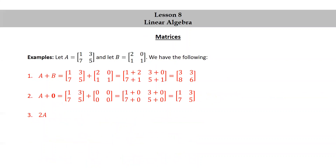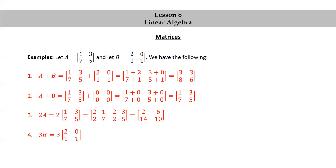Some more examples. 2A equals 2 times [1, 3; 7, 5] = [2×1, 2×3; 2×7, 2×5] = [2, 6; 14, 10]. 3B equals 3 times [2, 0; 1, 1] = [3×2, 3×0; 3×1, 3×1] = [6, 0; 3, 3].